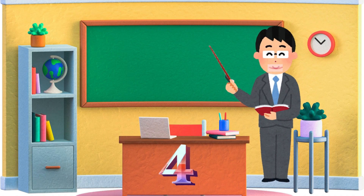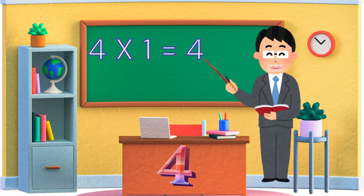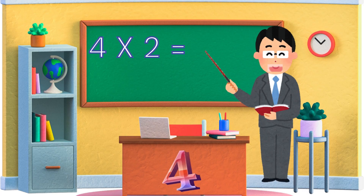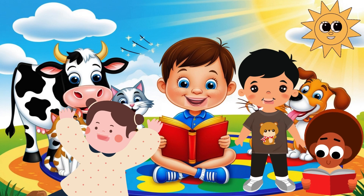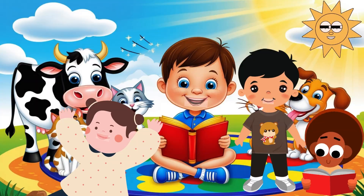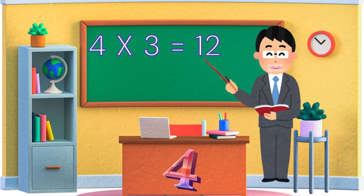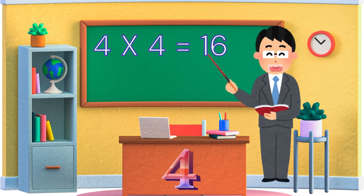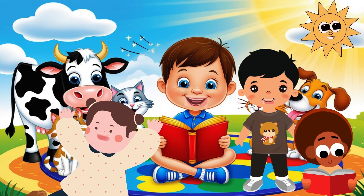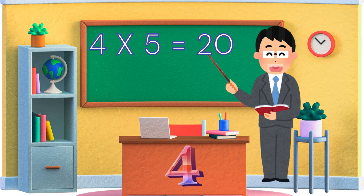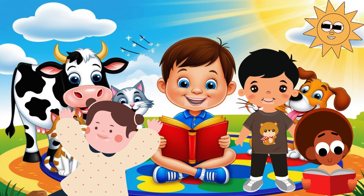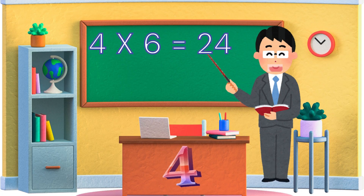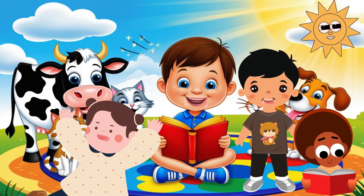Table of 4. 4 ones are 4, 4 twos are 8, 4 threes are 12, 4 fours are 16, 4 fives are 20, 4 sixes are 24.